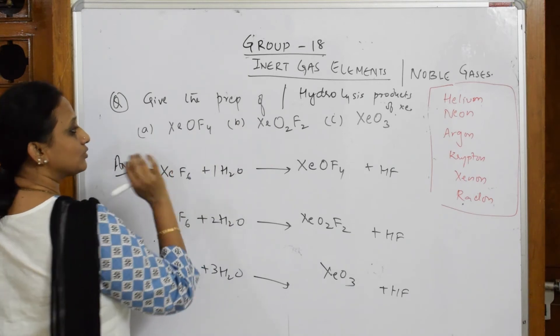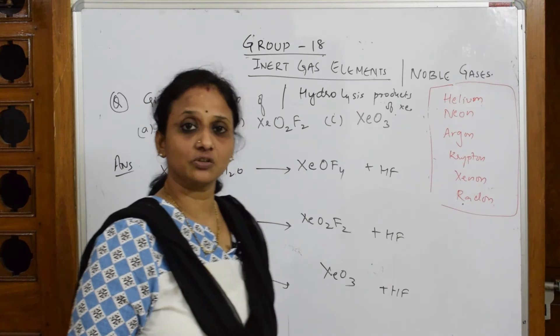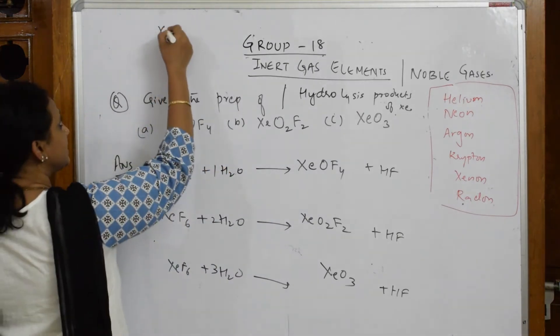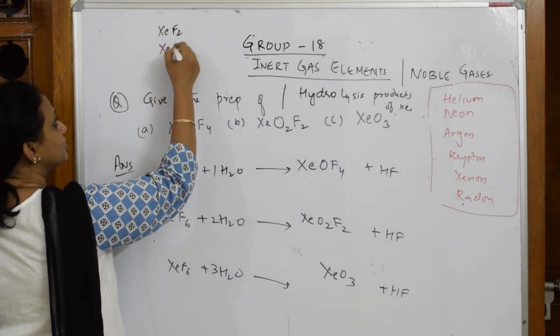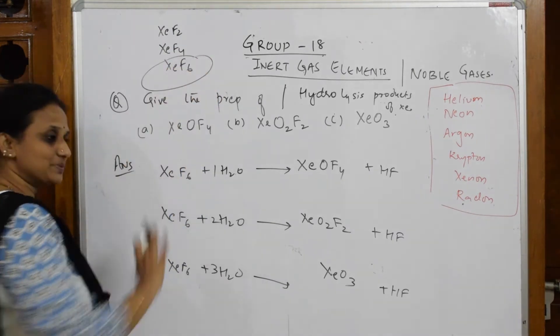Whenever they ask preparation of these compounds, the oxyfluoride or this one, you're going to prepare by hydrolysis of xenon. Which xenon? We have three: XeF2, XeF4, and XeF6.